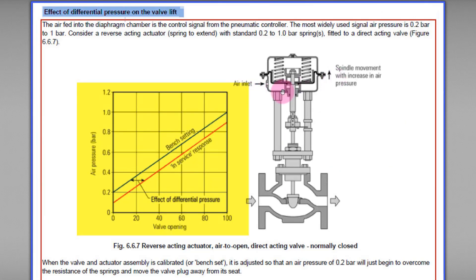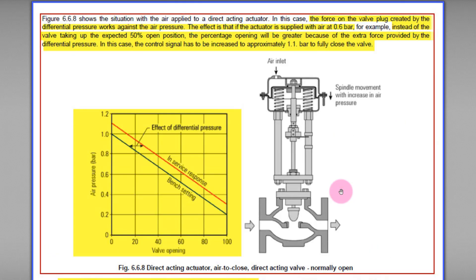For the reverse acting actuator, when instrument air is applied to the bottom of the actuator, the air pushes the diaphragm upward, compressing the actuator spring. As a result, the actuator stem and valve stem move upward, causing the valve plug to move up and open the valve seat or orifice, allowing fluid to flow.